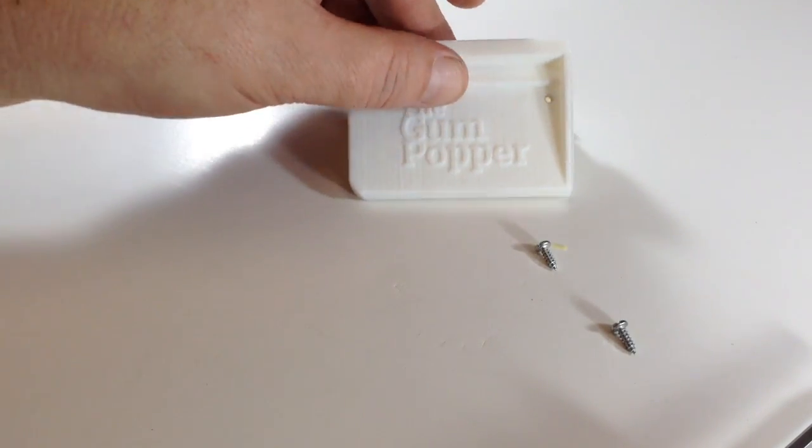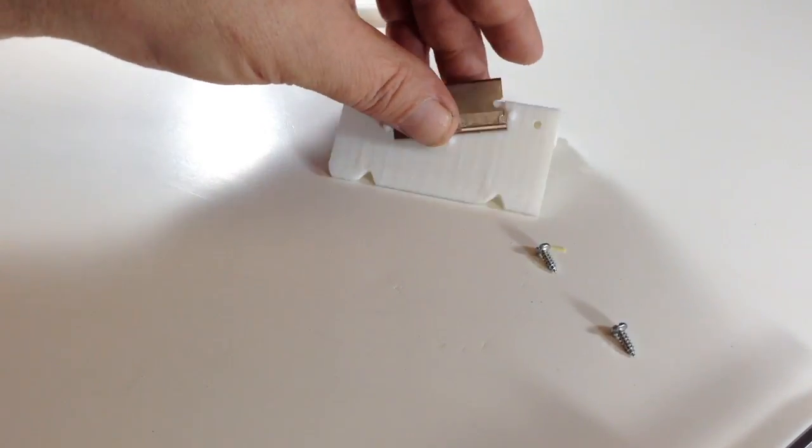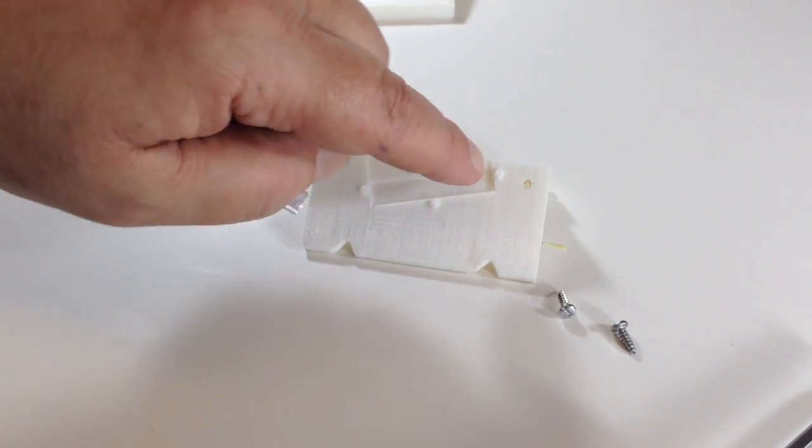So you've removed the two screws and you take off the top and the blade is right here. It sits in a recess here.